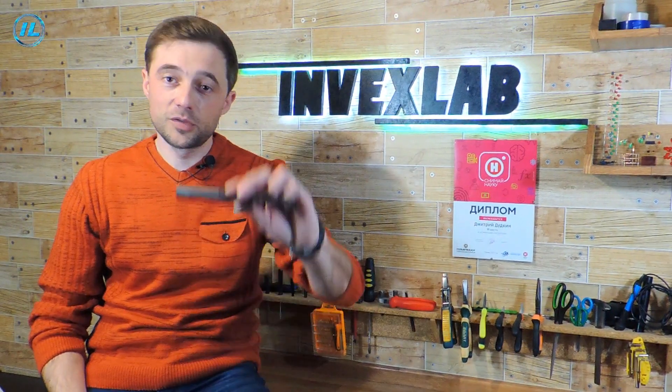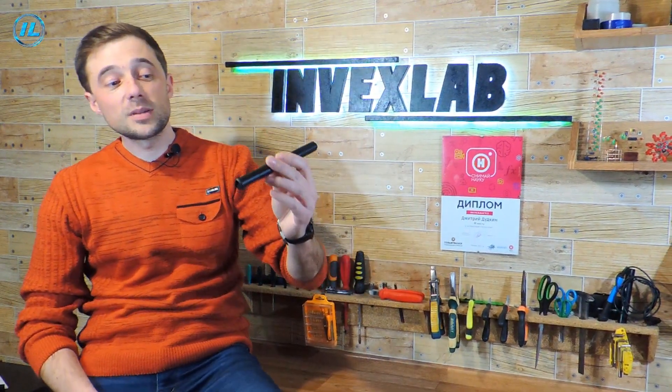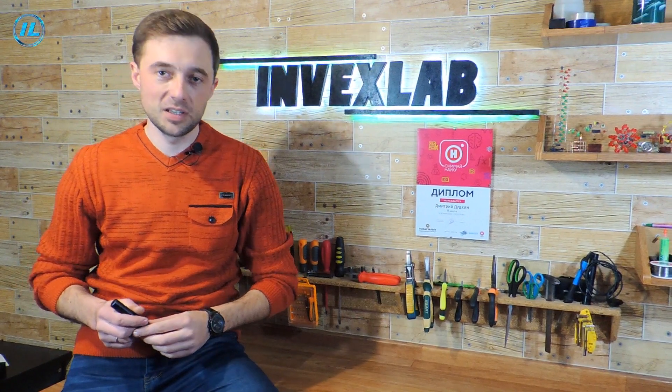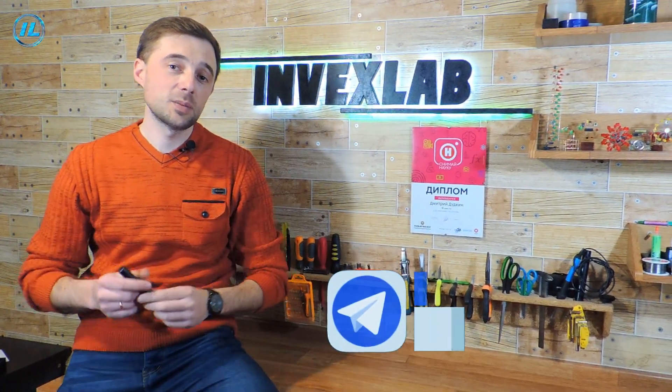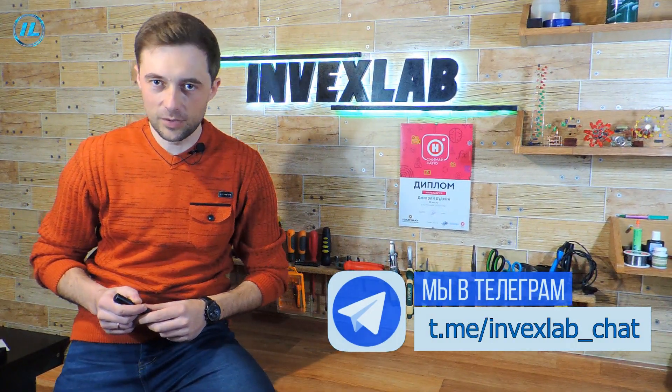As you can see, the soldering iron from FNIRSI is really very convenient. Now will be a great opportunity to test it in operation. With its help, I will assemble a scheme called Neon Beam. You can download the schematic diagram of this device, as well as ask questions you are interested in in the Telegram group. The link to the group will be in the description below this video. Join us.